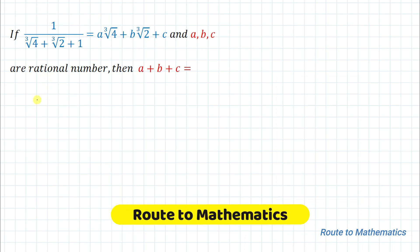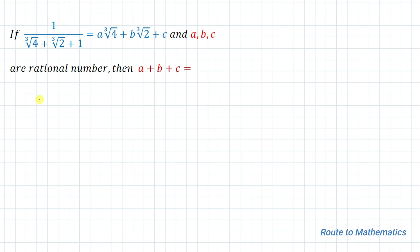Hello everyone, welcome to my channel Root to Mathematics. In this video we are going to solve an interesting algebraic problem. The given question is: if 1 divided by (cube root of 4 plus cube root of 2 plus 1) equals a multiplied with cube root of 4 plus b multiplied with cube root of 2 plus c, where a, b, c are rational numbers, then find the sum a plus b plus c. Without any delay, let's start the solution.